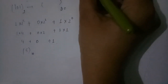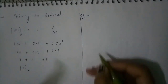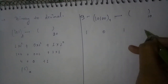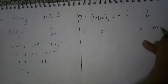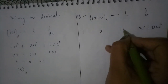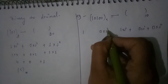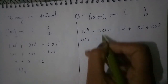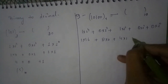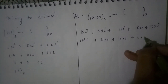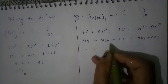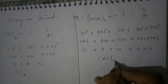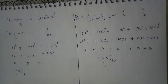Let's take another example — converting the binary number 10100 to decimal. We multiply each digit by 2 to the corresponding power: 0 × 2⁰ = 0, 0 × 2¹ = 0, 1 × 2² = 4, 0 × 2³ = 0, 1 × 2⁴ = 16. Adding: 16 + 0 + 4 + 0 + 0 = 20. So 10100 in binary equals 20 in decimal. This cross-checks our earlier decimal to binary conversion — the answers are correct.